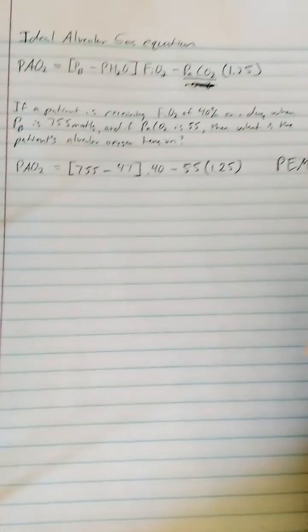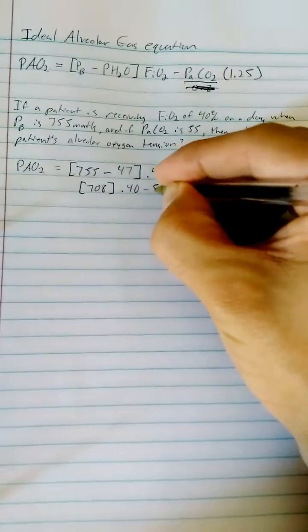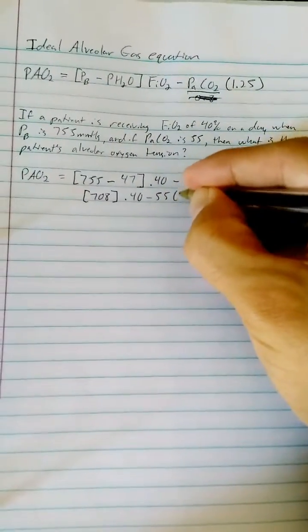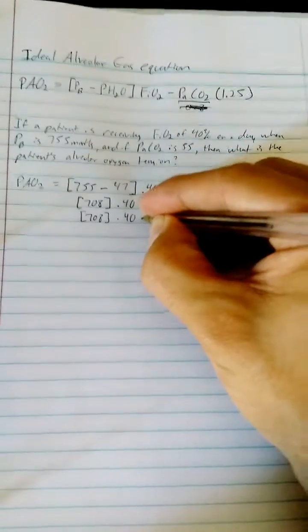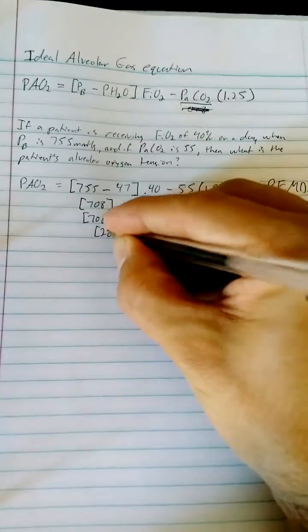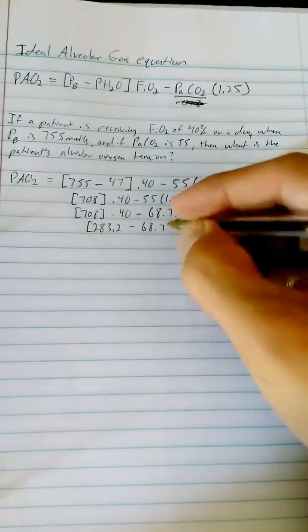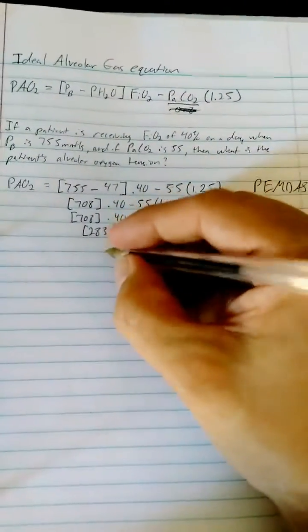As we work down, parentheses, we'll have 708 times 0.40 minus 55 times 1.25. Keep working down, we got 708 times 0.40, so that is 283.2. We do this multiplication, and 55 times 1.25 gives us 68.75.